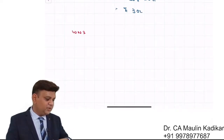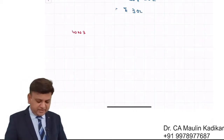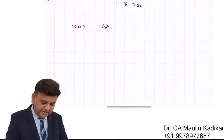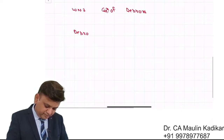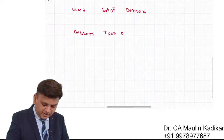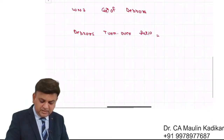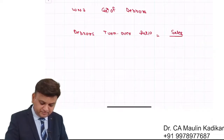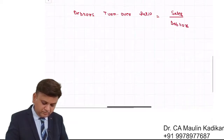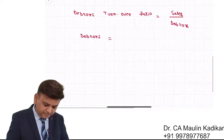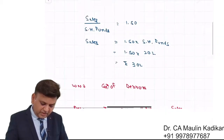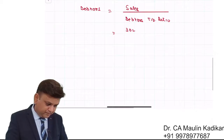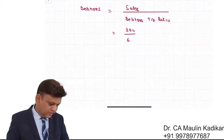The question also provides the current ratio and debtors turnover ratio, so we can compute debtors. Working Note 3: Calculation of debtors. Debtors turnover ratio is 6 times, calculated as sales upon debtors. So debtors = sales ÷ debtors turnover ratio = 30 lakhs ÷ 6, which comes to an amount of 5 lakhs.